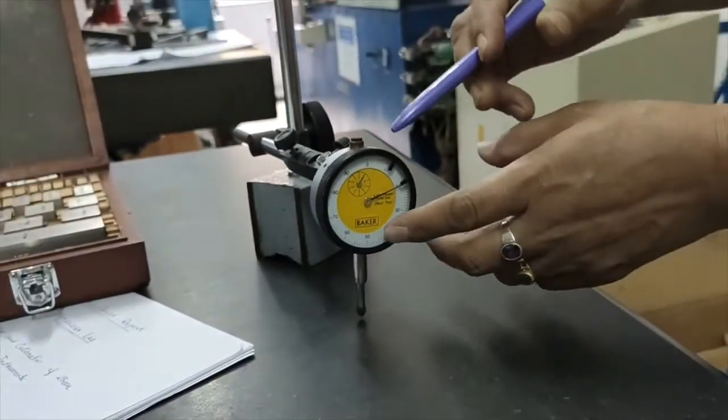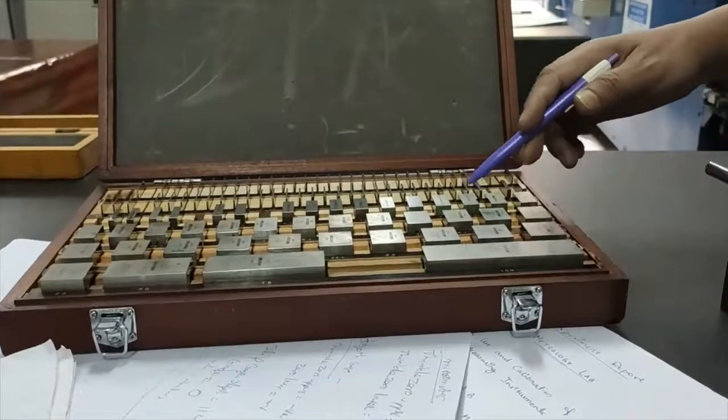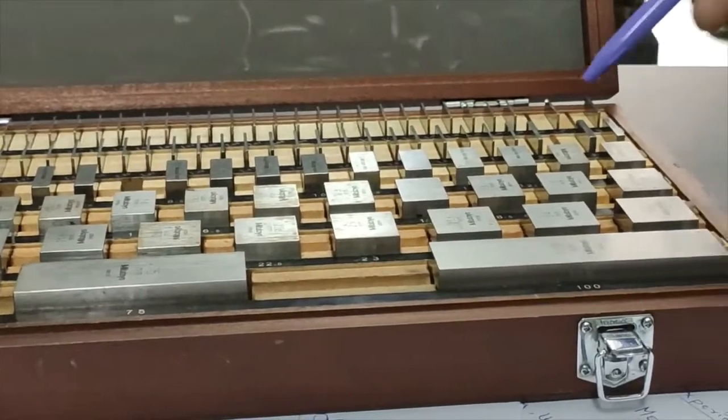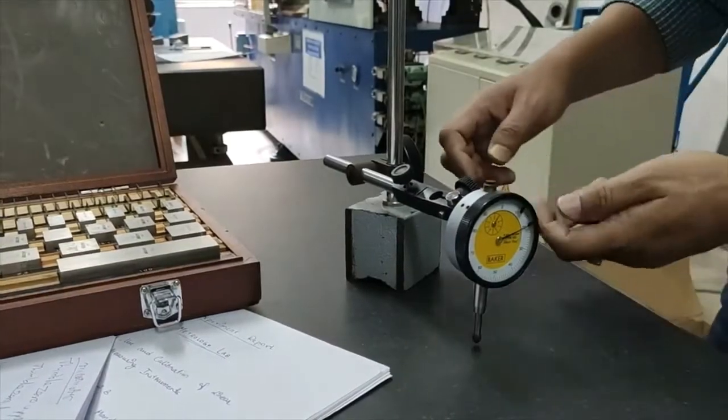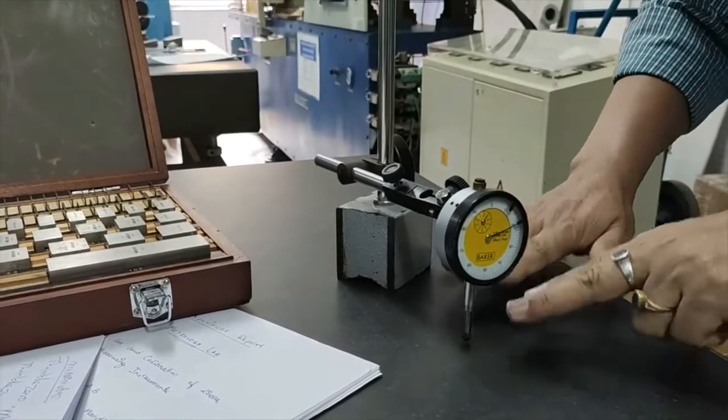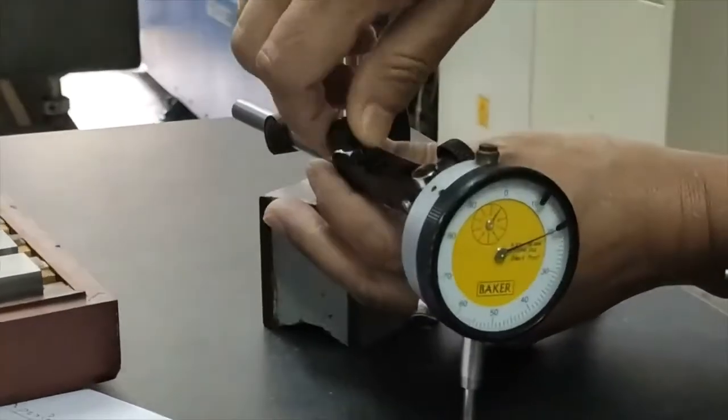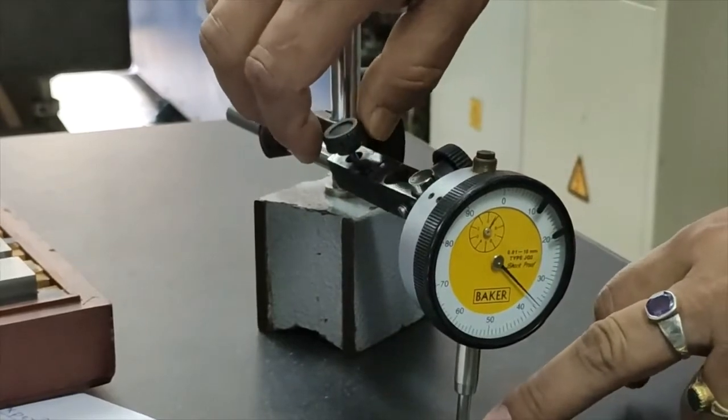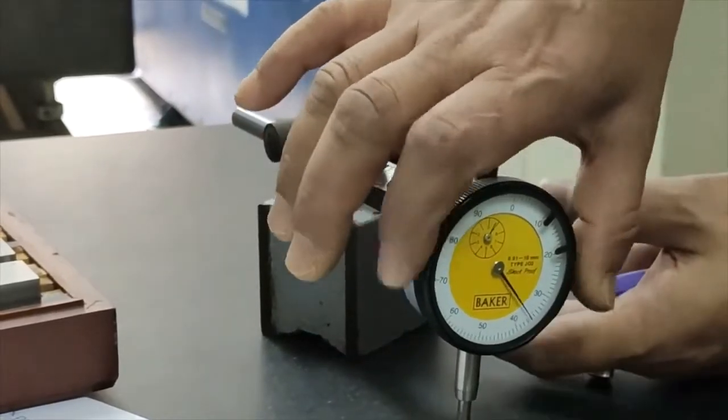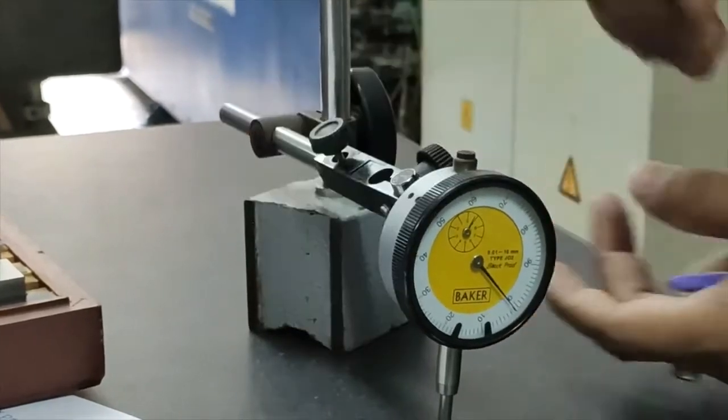With the help of slip gauges, which have standard sizes, we will calibrate it. For calibration purpose, we will place this dial indicator on the surface of the surface plate. Now first make it zero. This plunger will touch and you can adjust it to zero position. Yeah, this is zero.